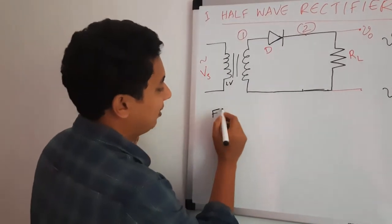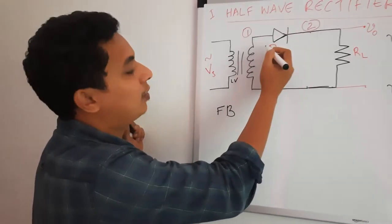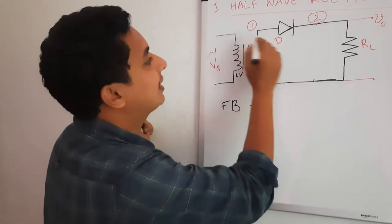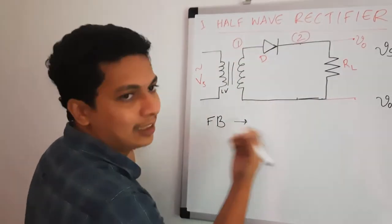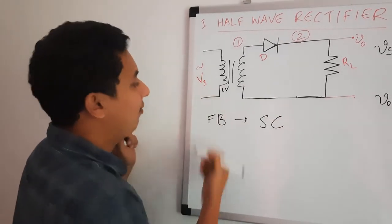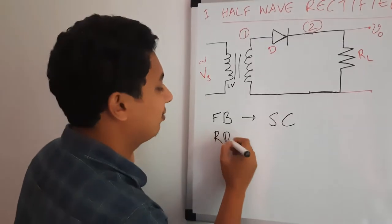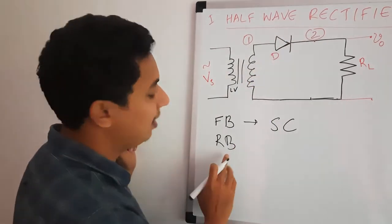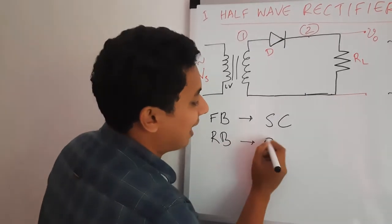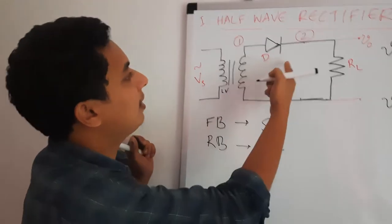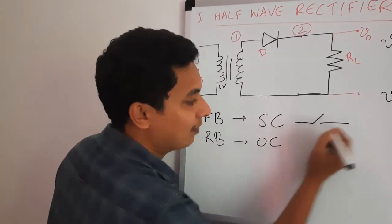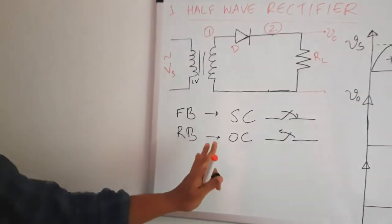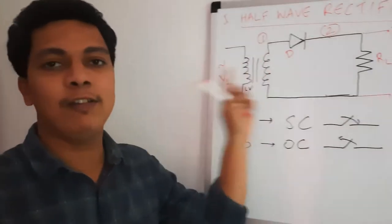Whenever your diode is forward biased — meaning the anode and cathode are such that the anode potential is higher than the cathode potential — that is called forward biased condition. Under forward bias, your diode conducts and acts as a short circuit. Whenever your diode is reverse biased, meaning the cathode potential is higher than the anode potential, your diode will not conduct and acts as an open circuit. So a diode is equivalent to a switch: whenever forward biased, the switch is closed; whenever reverse biased, the switch is open.